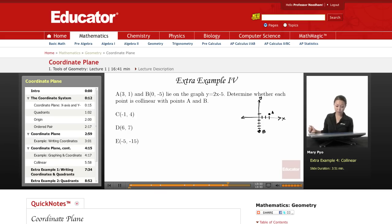They both lie on the graph y equals 2x minus 5. So if I draw a line through these points, that's going to be the line for this equation, y equals 2x minus 5. And you're just going to determine whether each point is collinear with the points A and B.